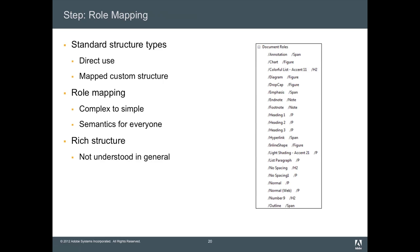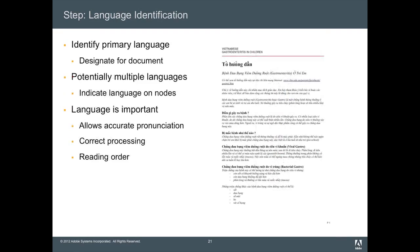The biggest problem we faced with logical structure was that when you have large arbitrary structures and give them to someone else, they don't have a clue what they mean. Even if I don't know what a 'colorful list accent 11' is — I have really no idea what that is as a semantic concept.